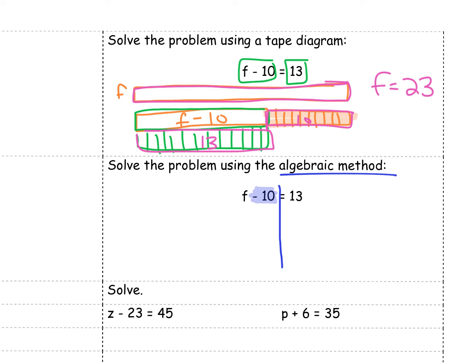So minus 10, and what number would make 0? Well, I know a negative 10 minus a negative are the same thing. And positive 10, when I combine them, they make 0. So I'm left with just f on the left side. But if I do something on the left, I have to do it on the right. I said plus 10, so I have to plus 10 on the other side. And 13 plus 10 is 23. I got the same answer, one visually using my tape diagram, one algebraically.